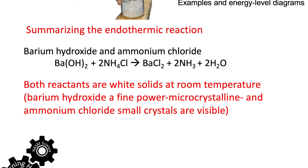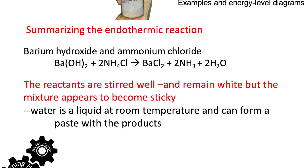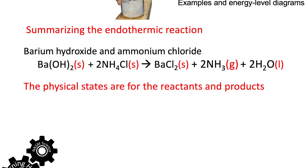To summarize and help with the physical states: both reactants are white solids at room temperature, so we'll label each with (s). Barium hydroxide is a finer powder and ammonium chloride consists of small crystals. The reactants are stirred well but the mixture goes sticky. The water produced is a liquid and forms a sticky paste with the products. Pause to check your result with the physical states shown.